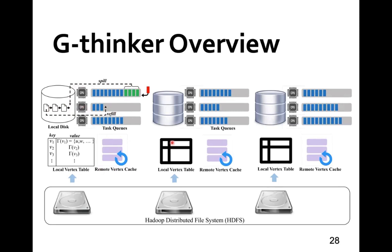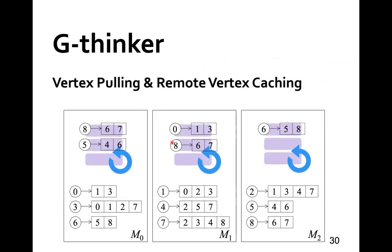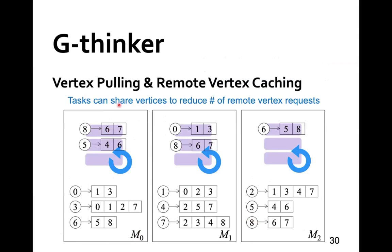Here is an illustration of how vertices are partitioned by the local vertex tables of all machines, which form a distributed key-value store where a task can pull the adjacency list of a vertex using its ID. For example, while vertex 8 is not in machine M0, if a task on M0 requests vertex 8, it will be pulled to the cache. If another task on M0 also needs vertex 8, it can then directly access it in the cache without sending a duplicate request.